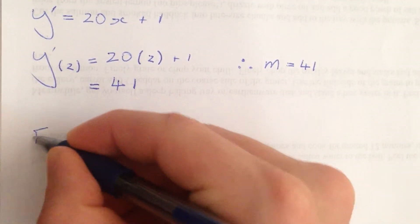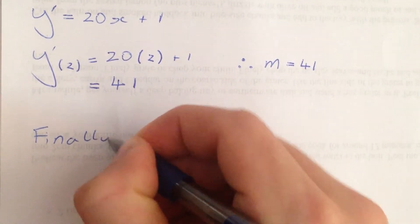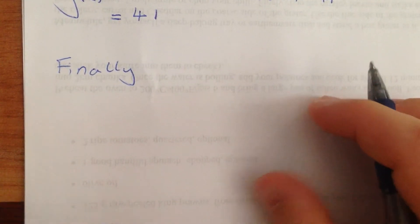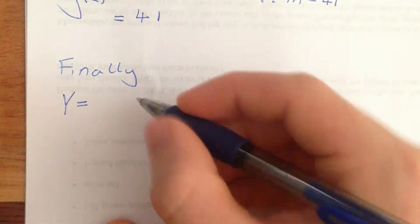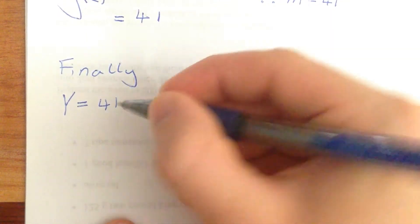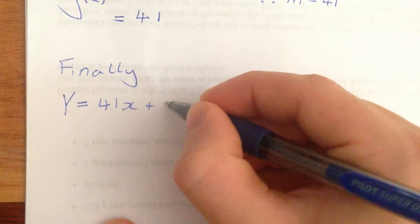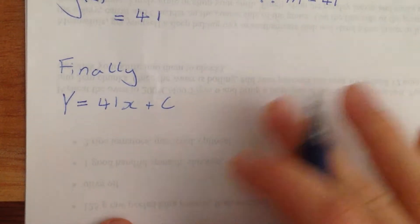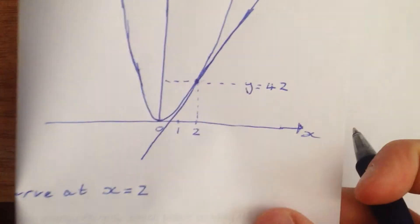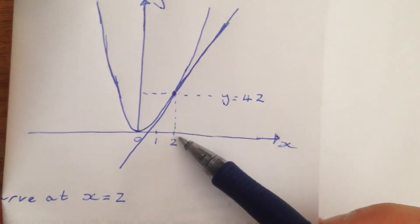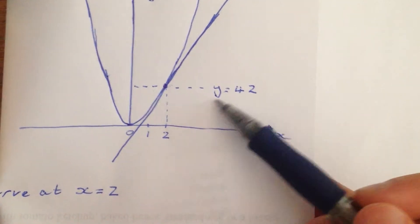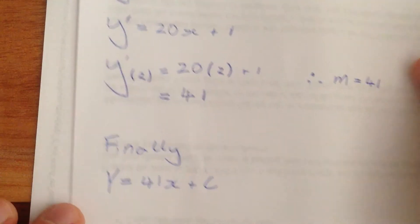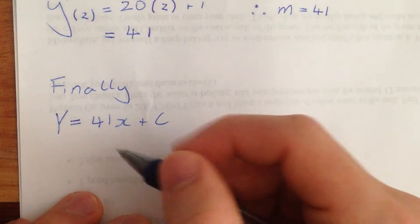So finally, we have our tangent equation: y equals 41x plus c. So with this, we can sub in two things. We can see from this equation that the point we're talking about is x equals 2, and the y value the function takes on at that point and the tangent is y equals 42. So I'll just go right ahead and sub that in.